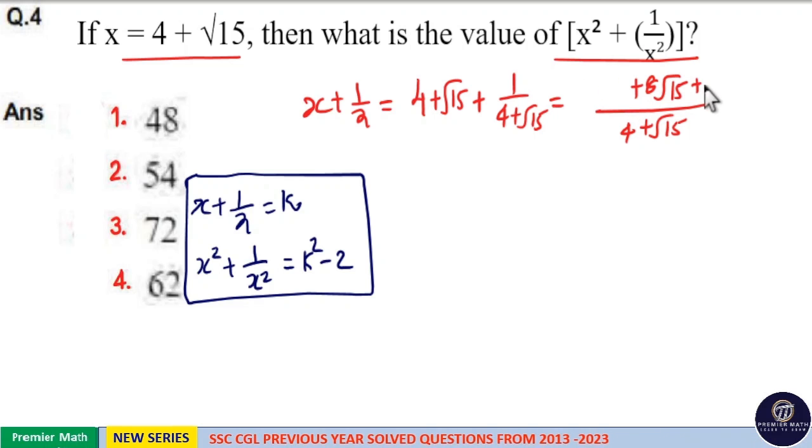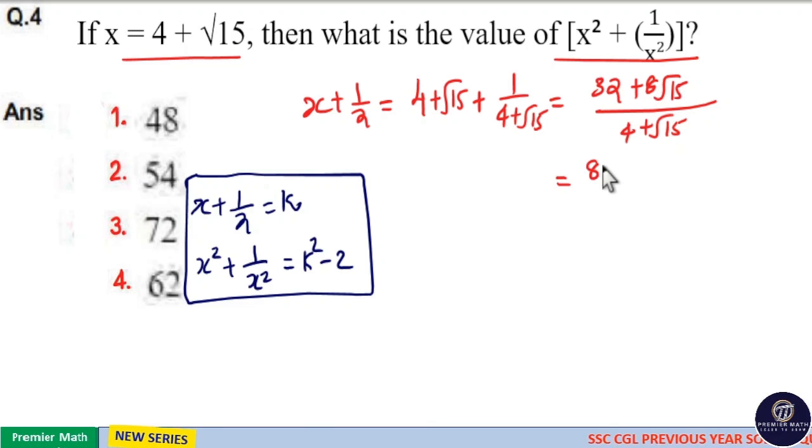So this is equal to 32 plus 8 root 15. Now this can be written as, if I take 8 outside, this will become 4 plus root 15 into 8 divided by 4 plus root 15. Now these two cancel, this is equal to 8.